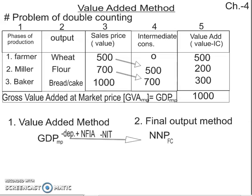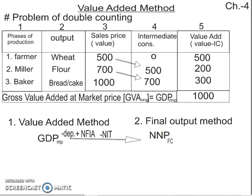To eliminate the problem of double counting, we use any one method — either the value-added method or the final output method. Do not combine both. If a question in your exam asks you to explain double counting, first explain what the problem of double counting is, then explain this table fully, then mention both methods of elimination, and conclude that at any point we use only one method.